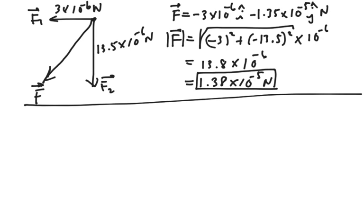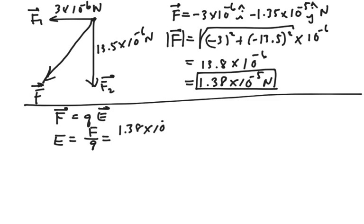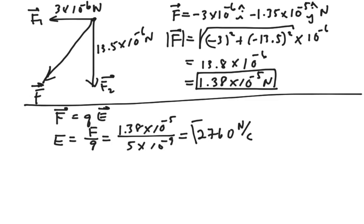We also want to find the magnitude of the electric field at the origin. We know that force equals charge times field, so the field equals the magnitude of the force divided by the charge. That would be 1.38×10⁻⁵ divided by the charge at the origin, 5×10⁻⁹, giving us a field of 2,760 newtons per coulomb. That field goes in the same direction as the force, so it points downward.